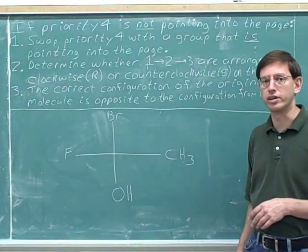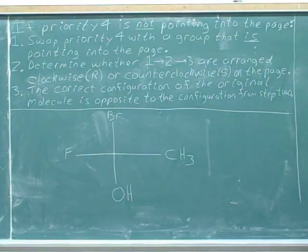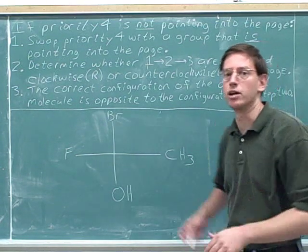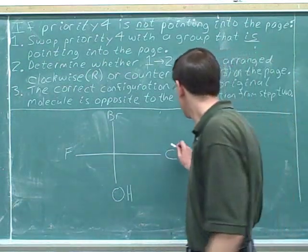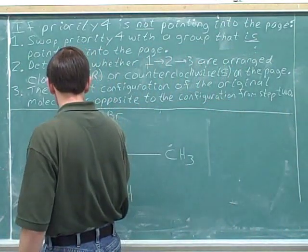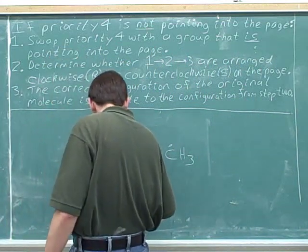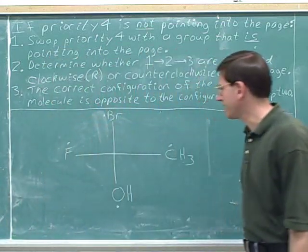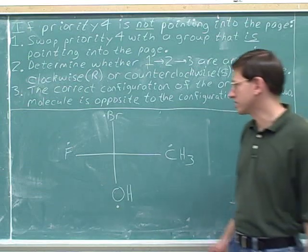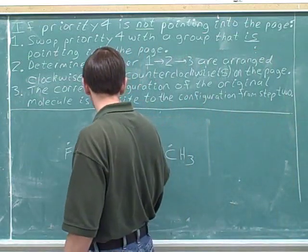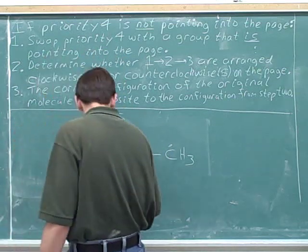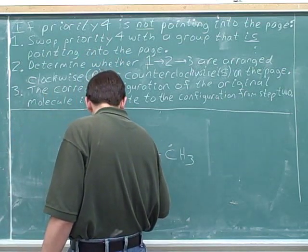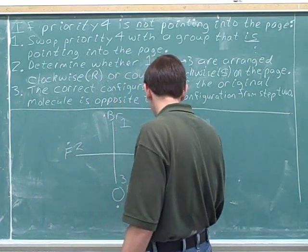Determine whether this stereocenter is R or S. We'll put dots in for the atoms that are directly connected to the stereocenter. Of the dotted atoms, the highest atomic number is bromine — that gets the number one priority. Then fluorine gets number two, oxygen gets number three, and the carbon gets number four.